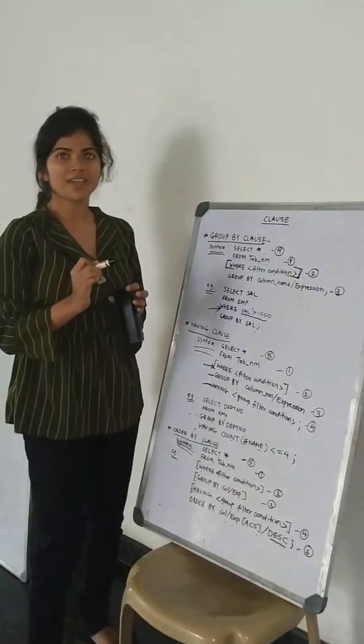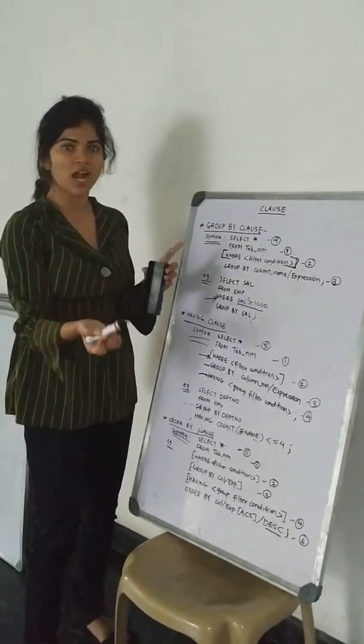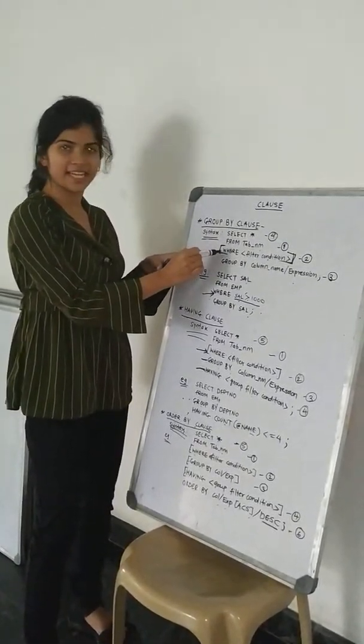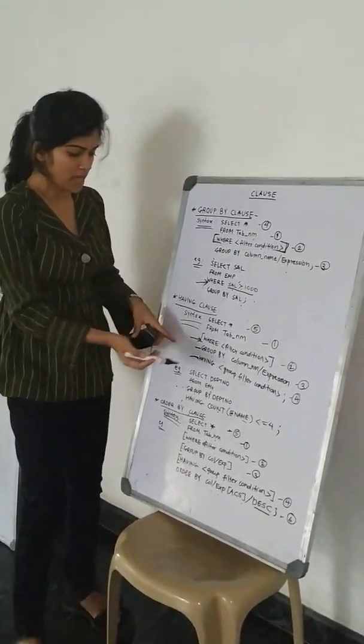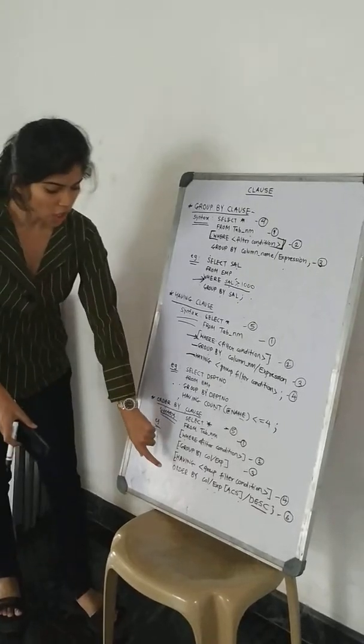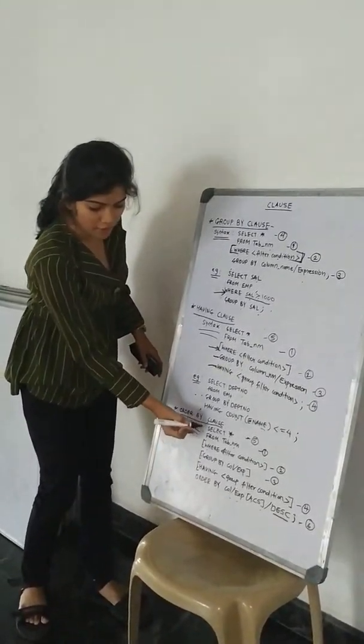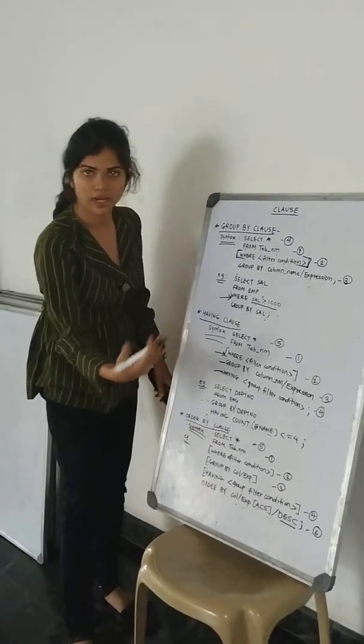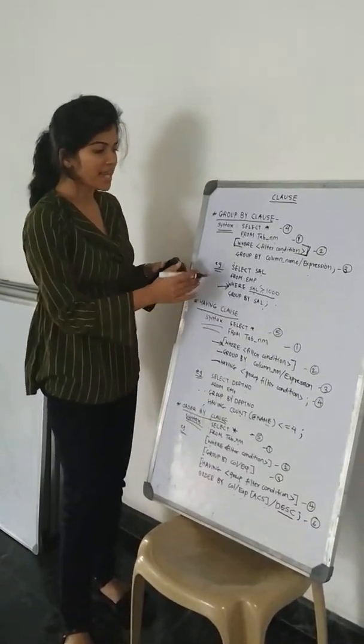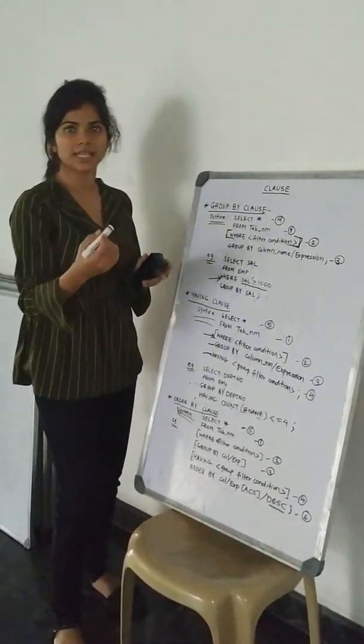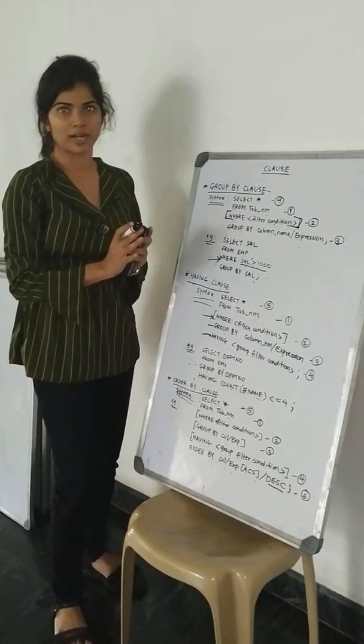And always we have to remember that the execution must be started from FROM, then WHERE if WHERE is there, and then GROUP BY, then HAVING. And then if the ORDER is there, at that time we have to first SELECT. We will execute SELECT, and then we will get to the ORDER BY. Otherwise, all the SELECT statements will be executed at last. This is the flow of the program.